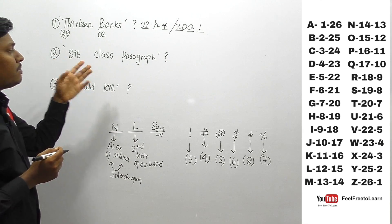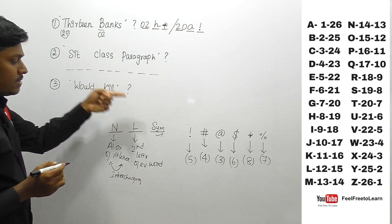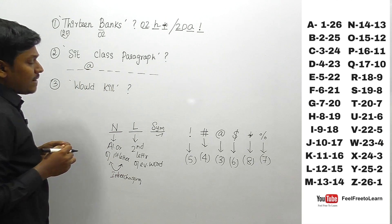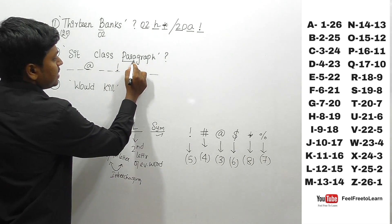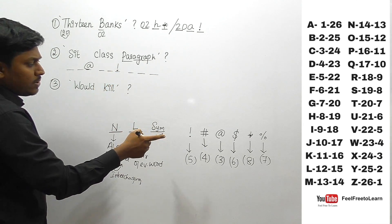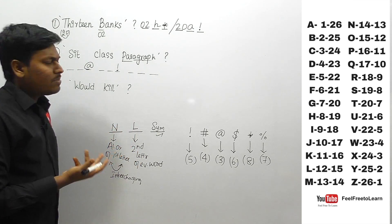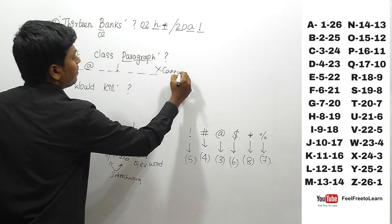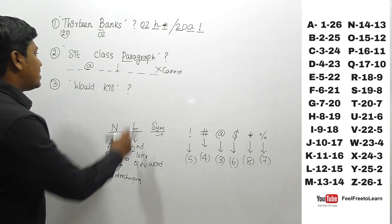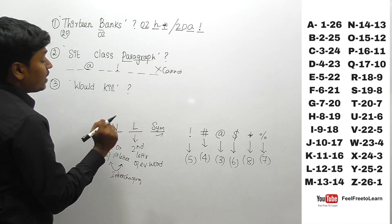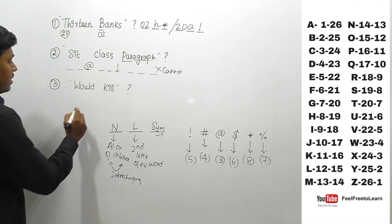Question 2: find the code for 'sit', 'class', and 'paragraph'. 'Sit' is 3 letters (@), 'class' is 5 letters (!). 'Paragraph' is 9 letters — but we only know symbols for up to 8-letter words. Since we don't know the symbol for a 9-letter word, the answer for question 2 is 'cannot be determined'.